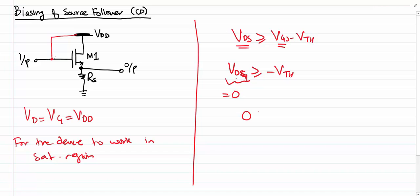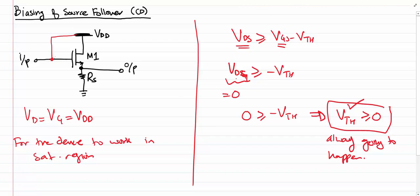If I rearrange this inequality, I'll get VTH is going to be greater than zero. So when we have connected VDD to the gate terminal, this condition is going to be there. As you can see, this is always going to happen, so we can say that the device is always in saturation region.